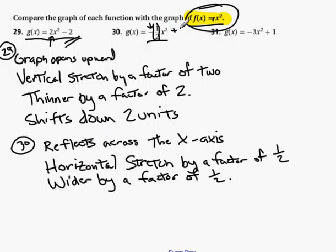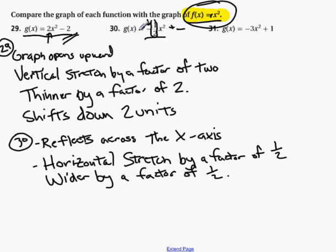And you notice that there is no c. There is no, it doesn't go up or down. So these are the only two differences it is from the original f of x equals x squared.